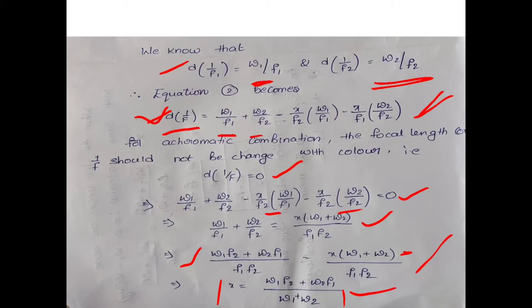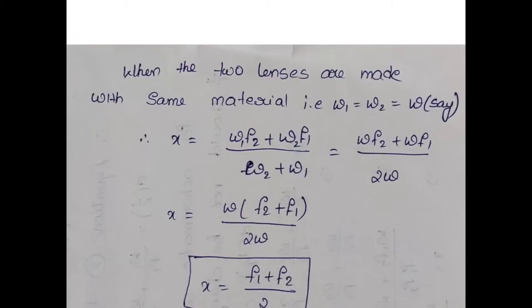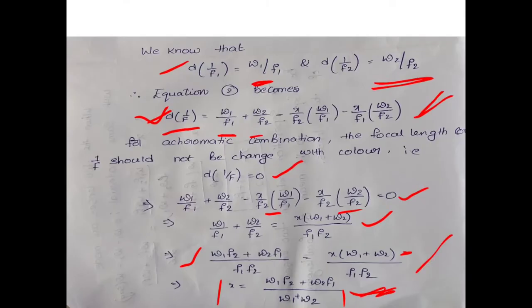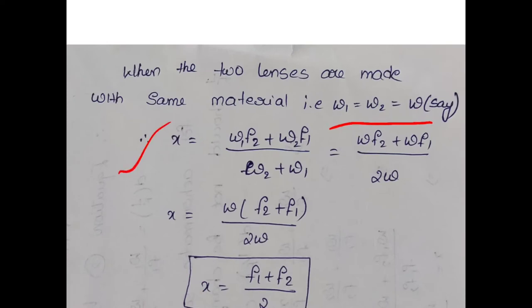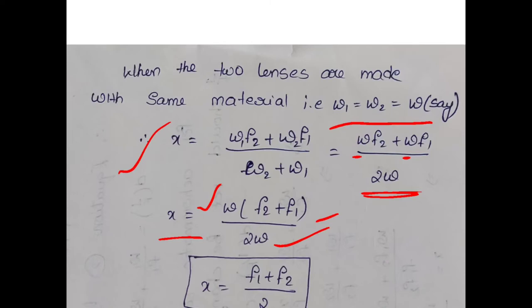Since the two lenses are made of the same material, their dispersive powers are equal: ω1 = ω2 = ω. Substituting into the equation for x: x = ω·(f2 + f1) / (2ω). The omega terms cancel in numerator and denominator, giving: x = (f1 + f2)/2. The distance separating the lenses equals the mean of their focal lengths.